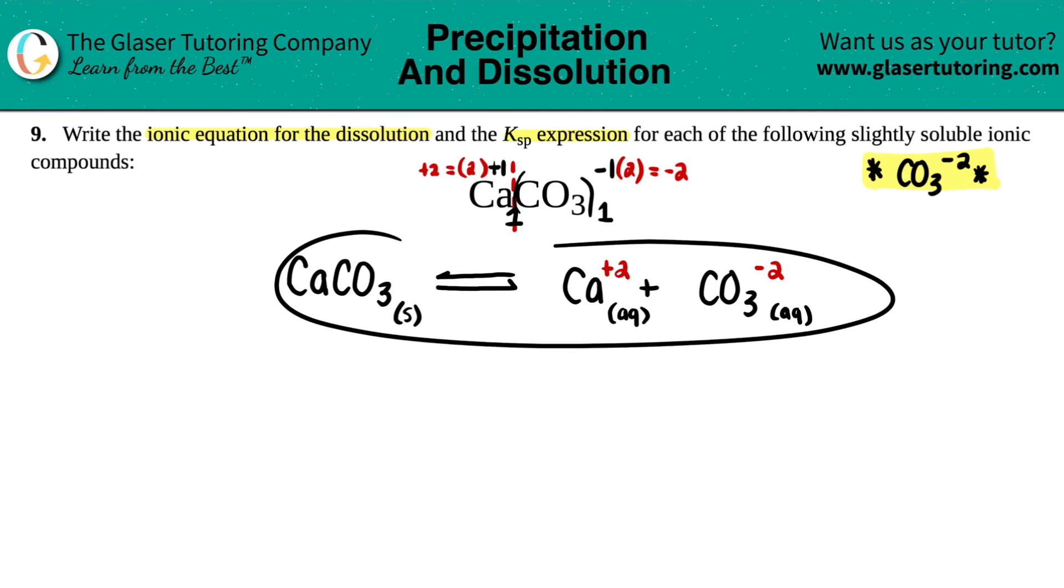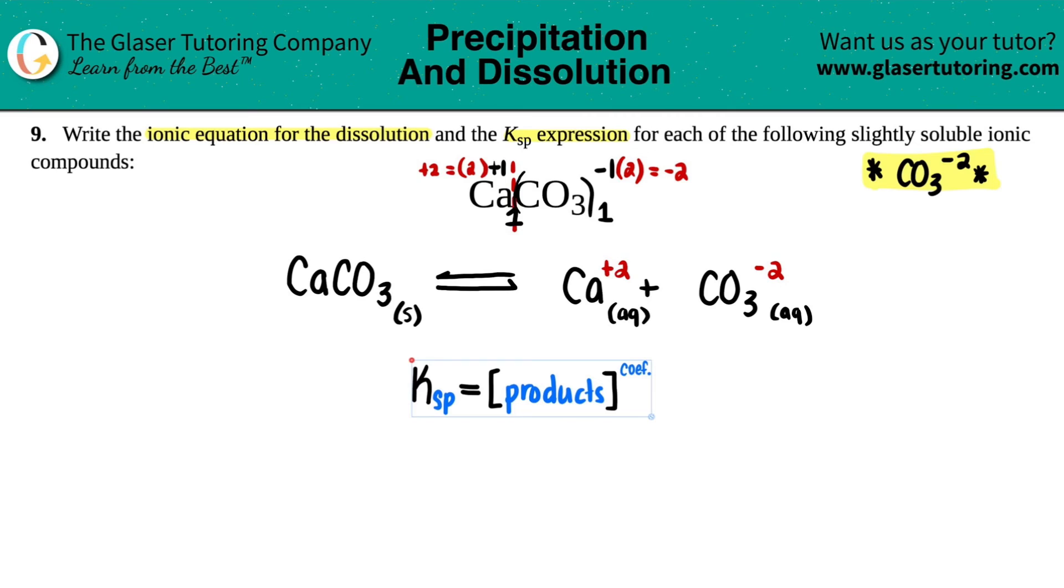Now, since we found the ionic compound, we could then find the KSP expression. And this one's pretty easy. It's this right here. KSP is just equal to the concentration of the products raised to their coefficients. Keep in mind that no solids or liquids are ever allowed in a KSP. So that's why we don't care about divided by the reactants as we normally do.